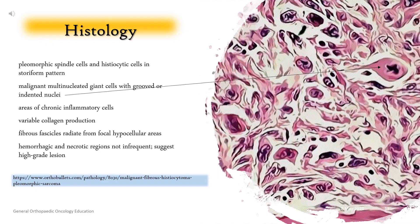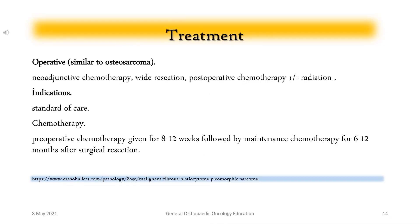Histology: Findings include pleomorphic spindle cells and histiocytic cells in a storiform pattern, malignant multi-nucleated giant cells with grooved or indented nuclei, areas of chronic inflammatory cells, variable collagen production, and fibrous fascicles radiating from focal hypercellular areas. Hemorrhagic and necrotic regions are not infrequent and suggest a high-grade lesion.